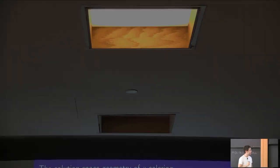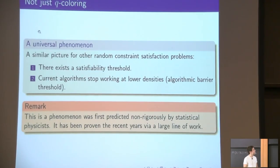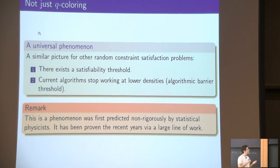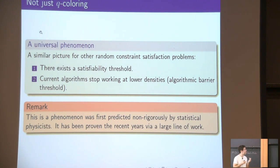Why am I telling you all this? By the way, this is not just for two-coloring, this is a universal phenomenon for pretty much every random constraint satisfaction problem people care about. And this was first predicted non-rigorously by statistical physicists, and in recent years it has been proven rigorously.